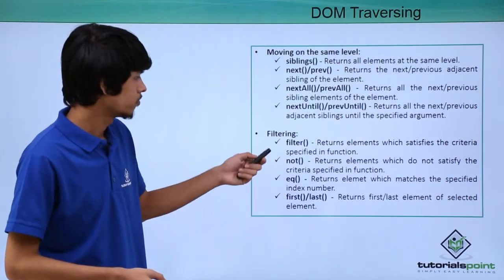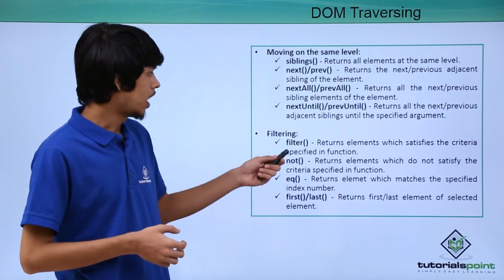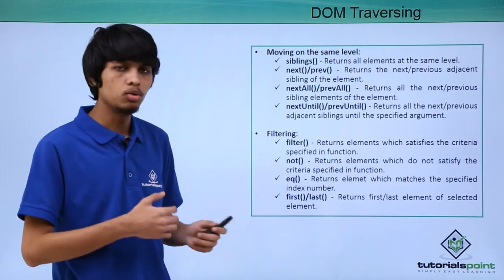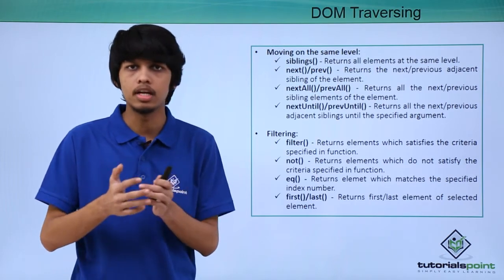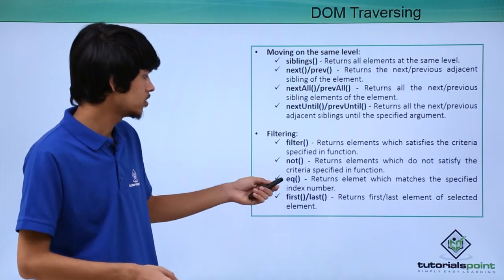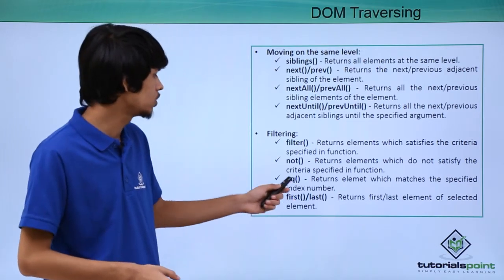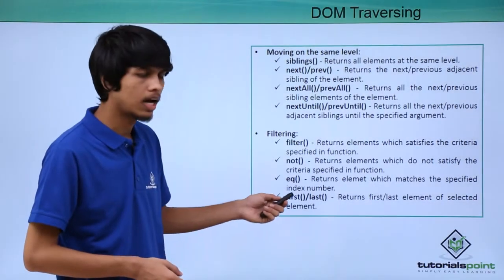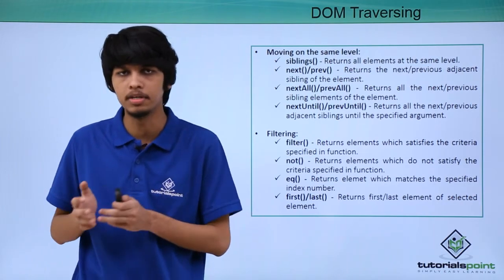Next is filtering. The filter() method lets us supply a condition and returns elements which satisfy that condition. Using not(), we can do exactly the opposite — supply a condition and filter elements based on the fact that they do not satisfy that condition. The eq() method returns the element matching the index number passed as an argument. Finally, first() and last() return the first and last element of the selected elements respectively.